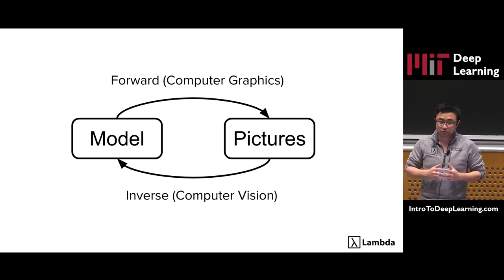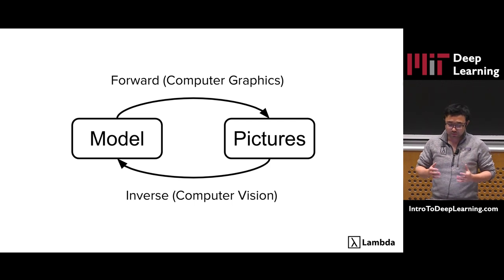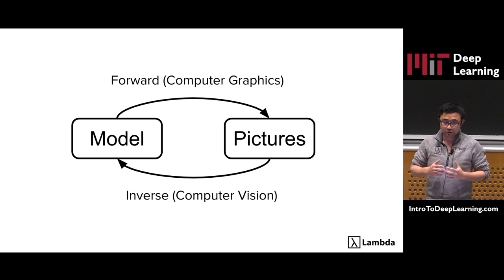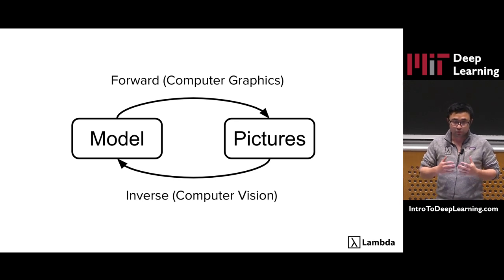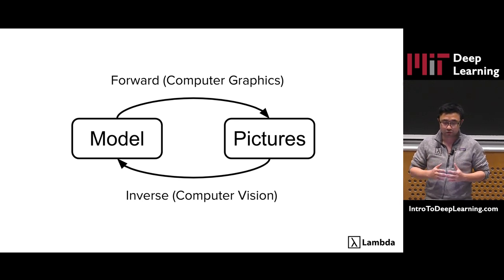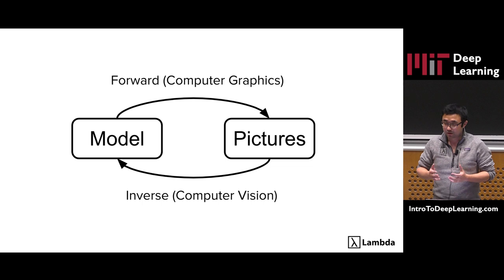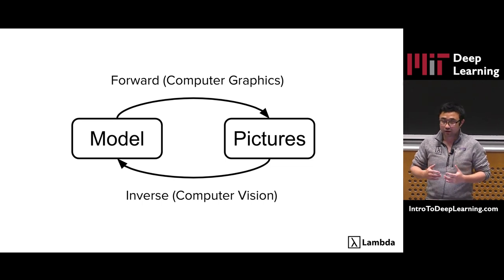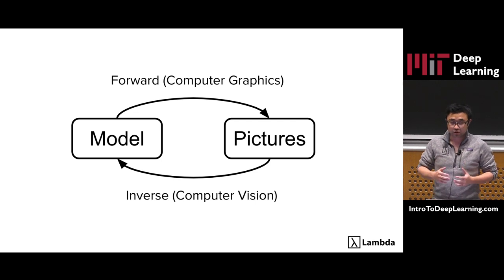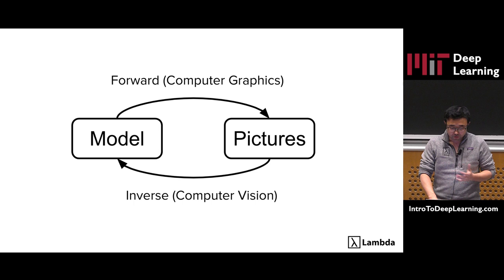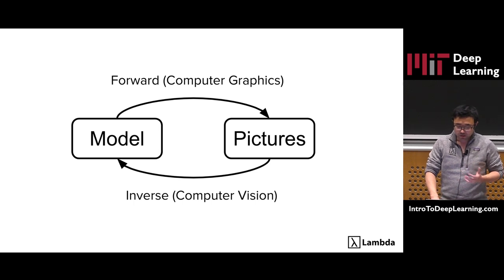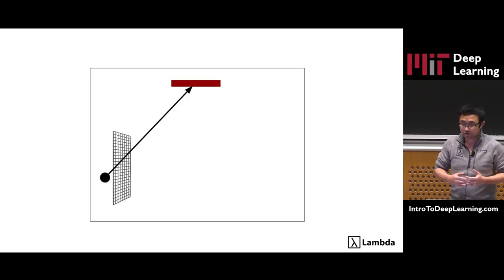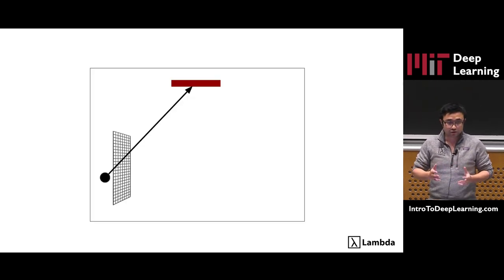Forward rendering and inverse rendering are interestingly related, because the high-level representation of a vision system should look like a representation using computer graphics. In this lecture, I'm going to talk about how machine learning can be used to improve the solution to both of these two problems. But before we dive into neural networks, let's first take a very quick tour of the conventional method.